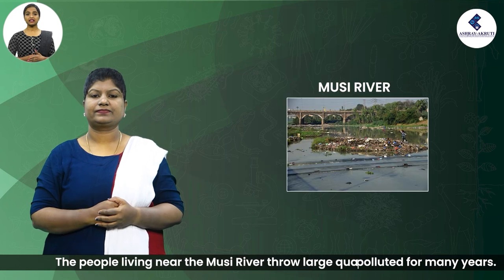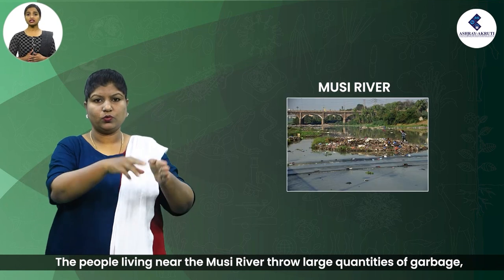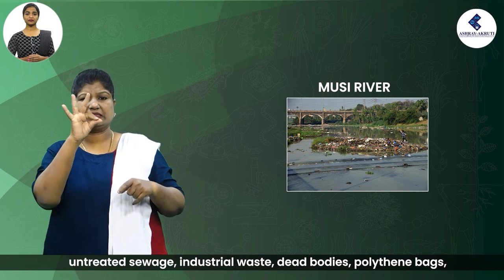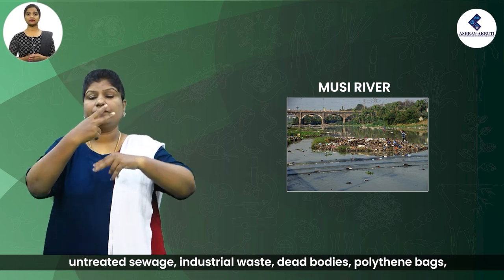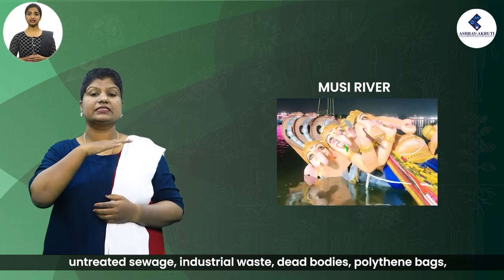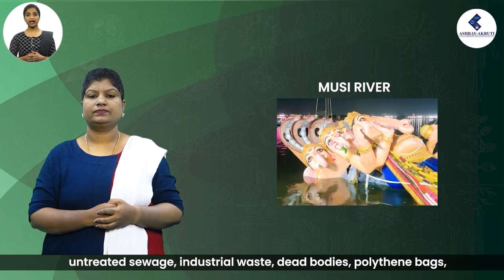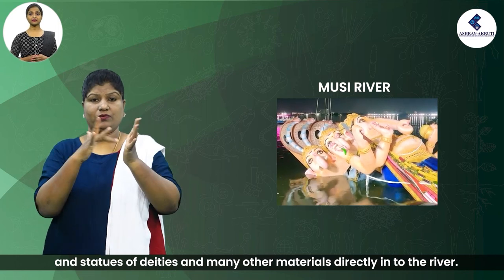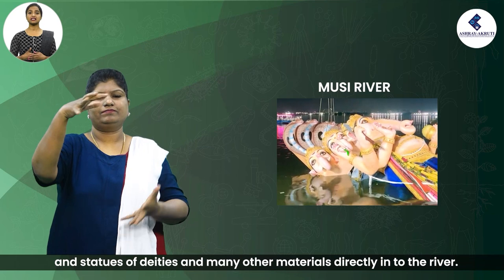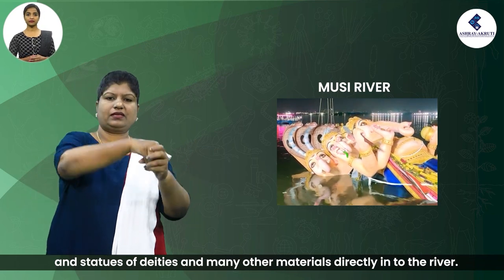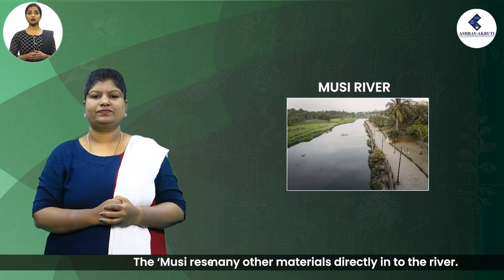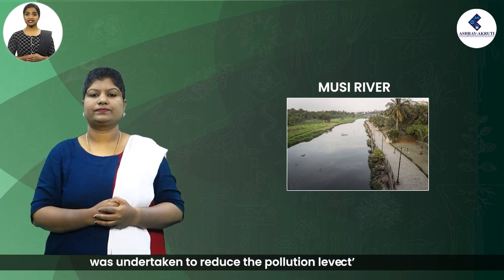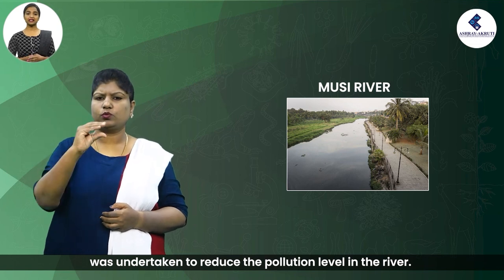The people living near the Musi River throw large quantities of garbage, untreated sewage, industrial waste, dead bodies, polythene bags and statues of deities, and many other materials directly into the river. The Musi Reservoir Action Plan project was undertaken to reduce the pollution level in the river.